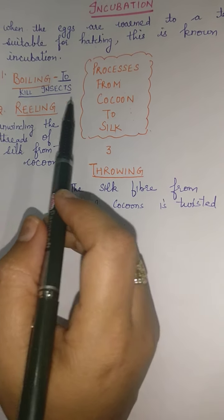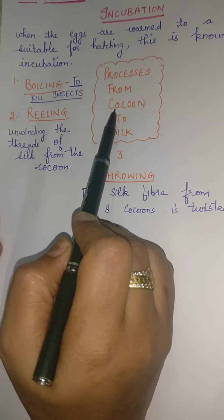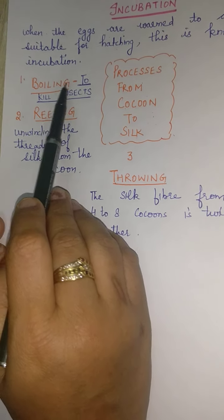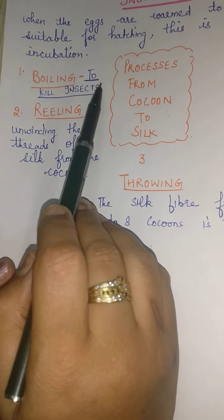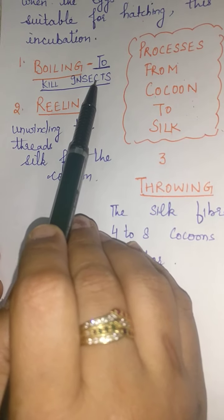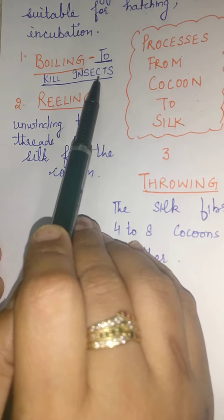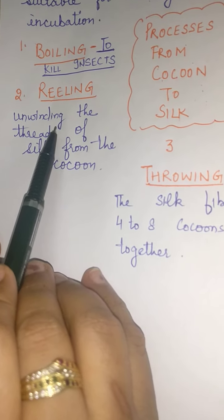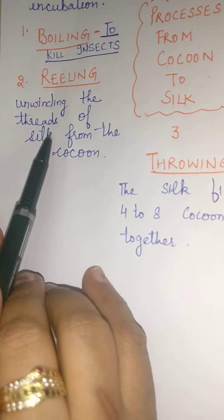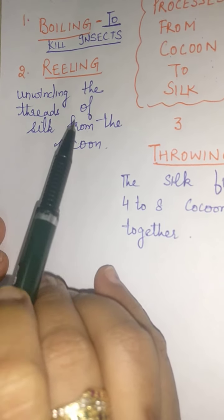Let's go through these processes once again. Boiling is mainly done to kill the insects. Reeling means unwinding the threads of silk from the cocoon.